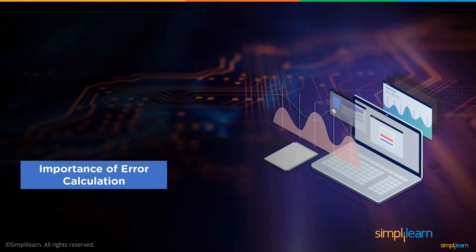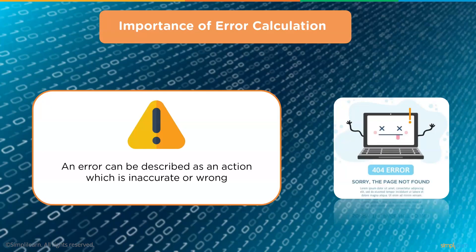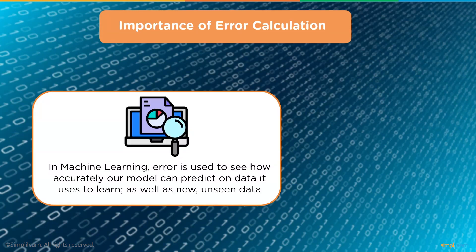Importance of error calculation. Error can be described as an action which is inaccurate or wrong — like the 404 error when trying to find a website. In machine learning, error is used to see how accurately our model can predict on data it uses to learn as well as new unseen data.